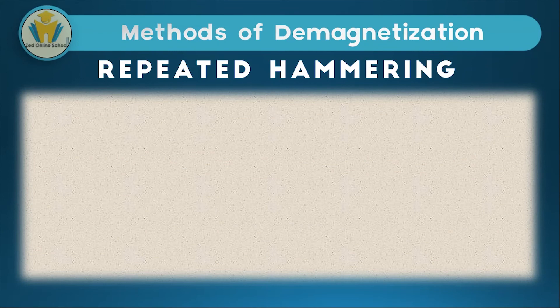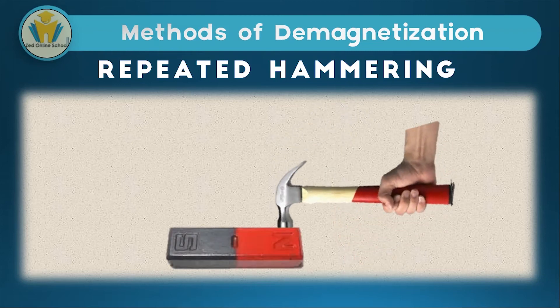Repeated hammering is also another method of demagnetizing a magnet. If you no longer want something to be a magnet, you can just hammer it many times and it will stop being a magnet. The effect of dropping a magnet is similar to repeated hammering — if a magnet is dropped several times, its magnetic strength will reduce.